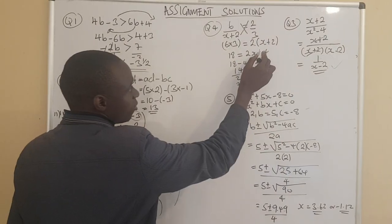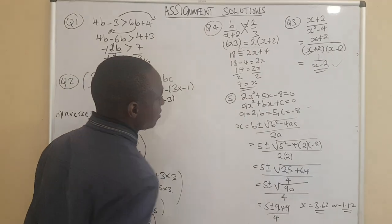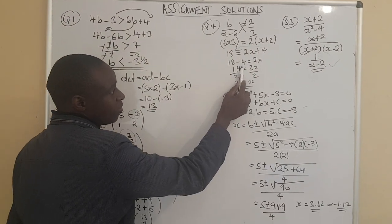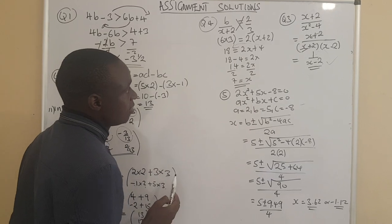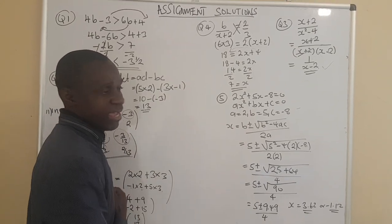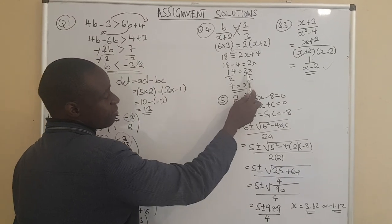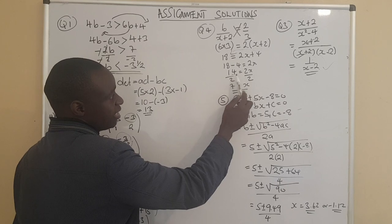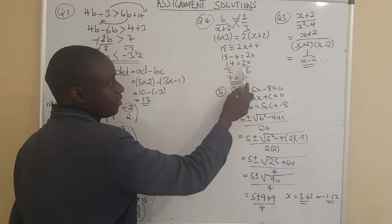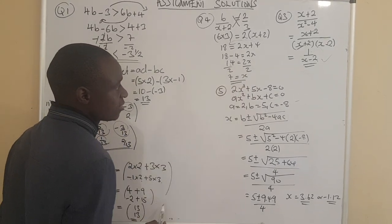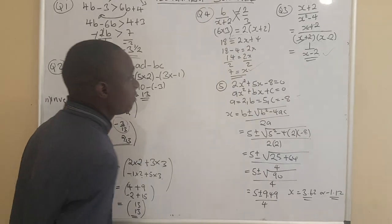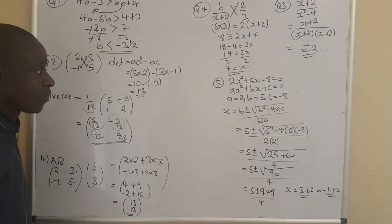Our interest is for x to remain alone, so we divide both sides by 2. 2 into 2 gives 1; 2 into 14 gives 7. So x equals 7 was the answer for question 4.